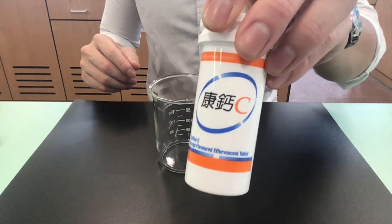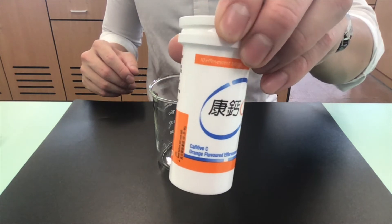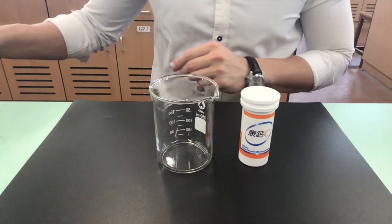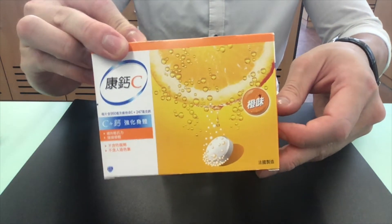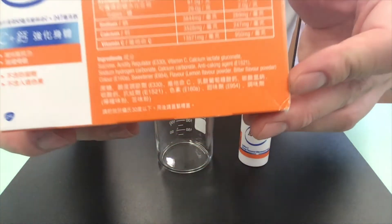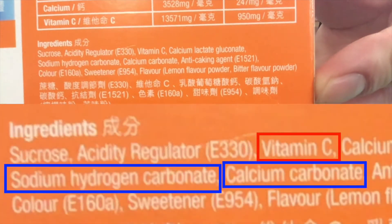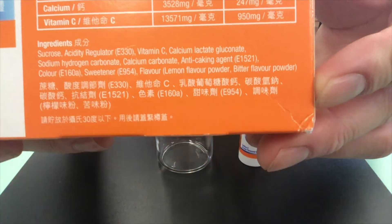This is a sample of effervescence tablet. When you add this effervescence tablet in water, it will give you a fizzy drink that supplies you with vitamins and minerals. Looking at the ingredients, the tablet contains vitamin C. Vitamin C is also known as ascorbic acid, which is an acid. The tablet also contains sodium hydrogen carbonate and calcium carbonate. They can both react with acid to produce carbon dioxide, which is responsible for the effervescence.